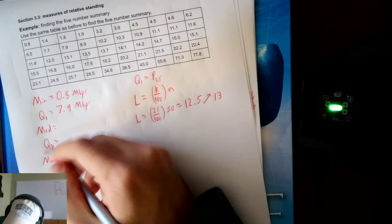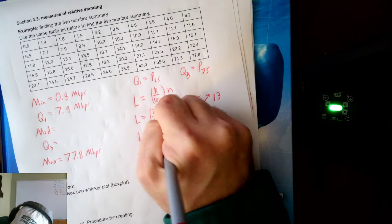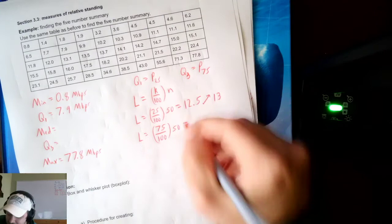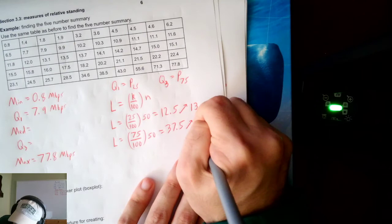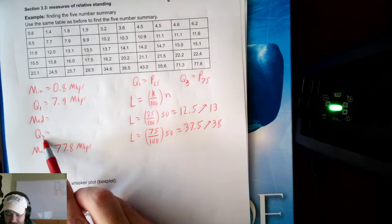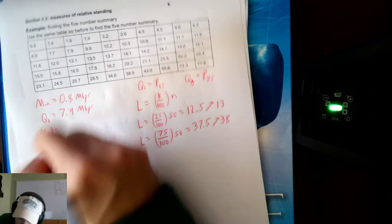For Q3 (P75): L equals 75 over 100 times 50 equals 37.5 — a decimal, so round up to 38. The 38th number is 21.5 megabits per second. That is Q3.